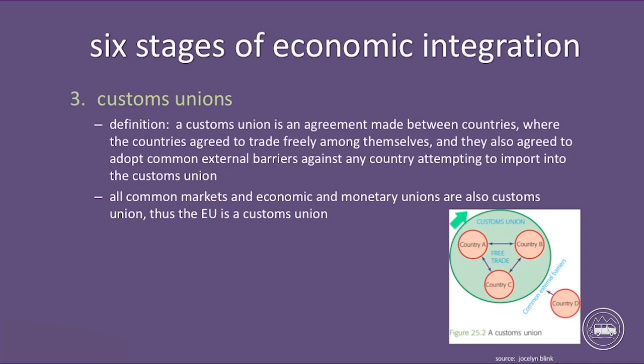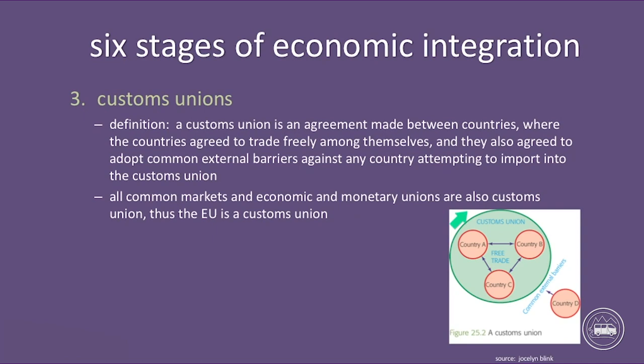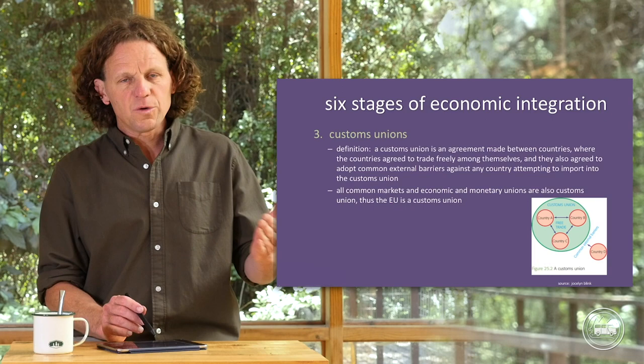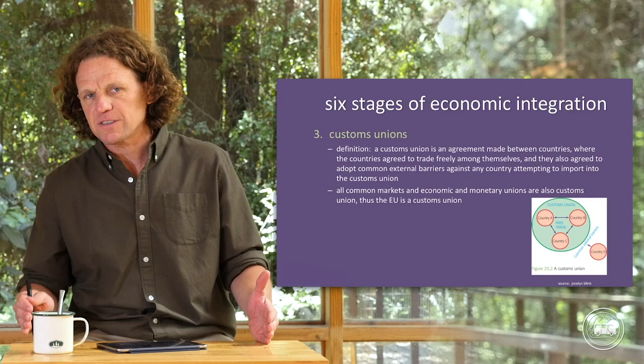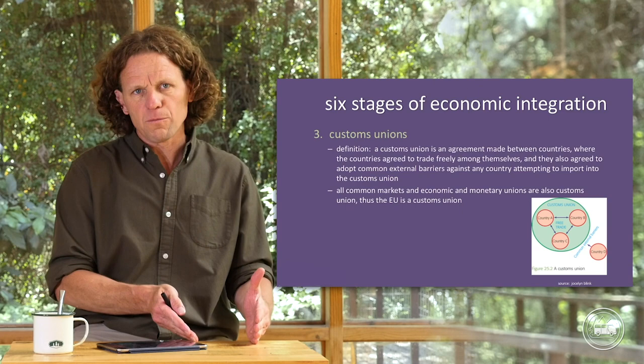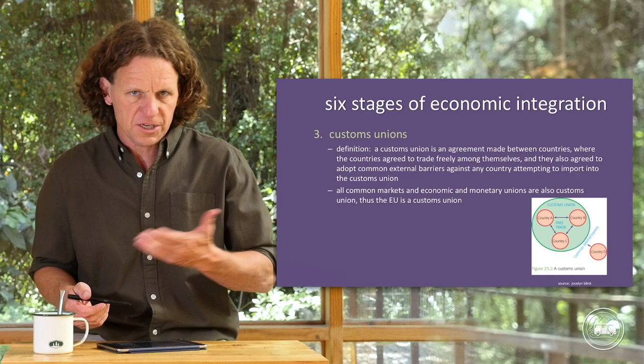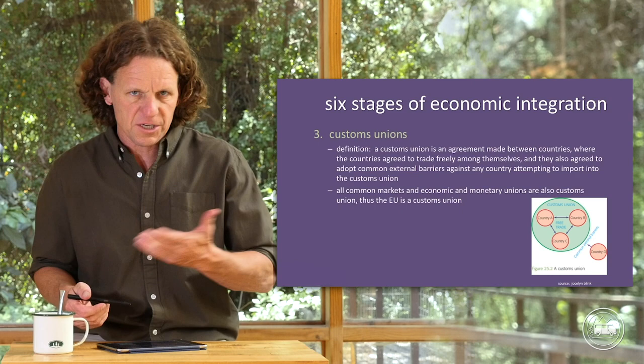All common markets and economic and monetary unions are also customs unions, and therefore the EU is a customs union. As we go through these stages — one, two, three, four, five, six — stage six will have all the characteristics of five, four, three, two, and one. They're building on each other, and that makes sense. As you become more and more integrated, you don't stop being integrated in one way — otherwise it wouldn't be full economic integration when you get to the end. So that's number three: customs union.